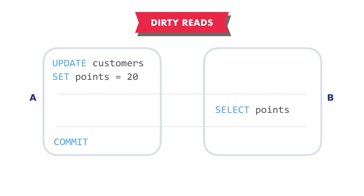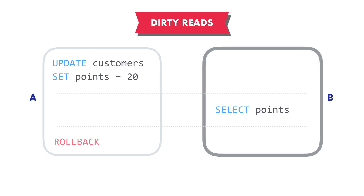So it's going to give this customer a $20 discount. Now, what if transaction A rolls back before transaction B completes? Transaction B would have data that had never existed. In other words, this customer never had 20 points — this was never committed to the database — and transaction B gave this customer a $20 discount. So in this scenario, we have read uncommitted data in transaction B. Our data was dirty. To solve this problem, we need to provide a level of isolation around our transactions, so data modified by a transaction is not immediately visible to other transactions unless it's committed.